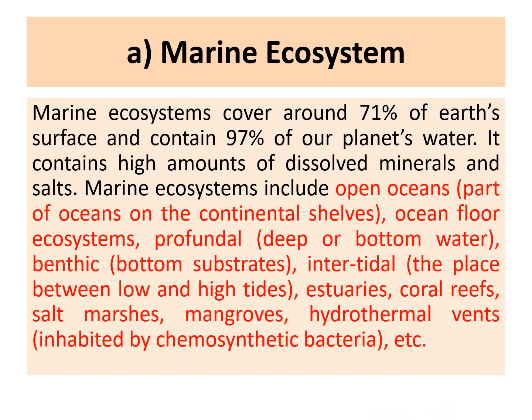The first type of aquatic ecosystem is a marine ecosystem. Marine ecosystems are supposed to be one of the world's biggest ecosystems, covering around 71% of the Earth's surface area, and containing 97% of our planet's water. It contains a lot of organisms, along with dissolved minerals and salts.